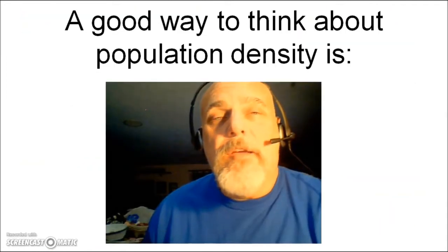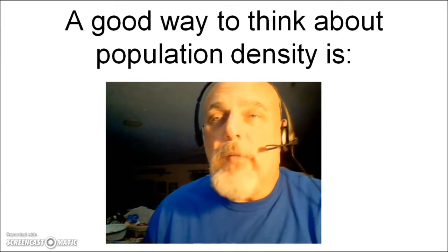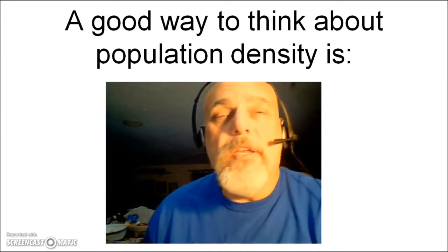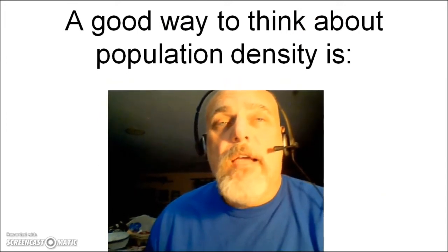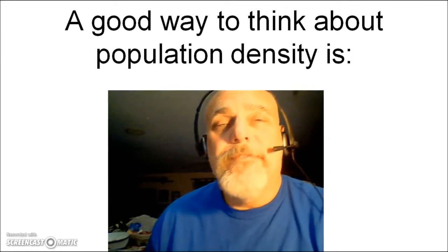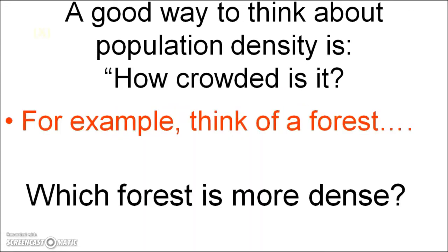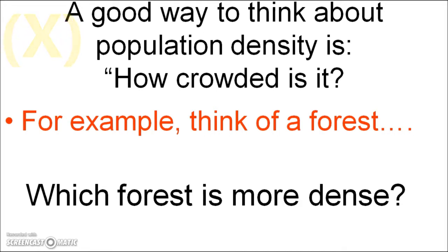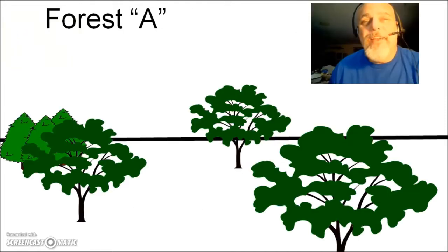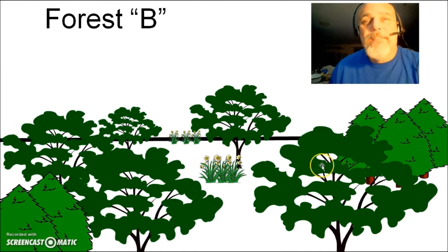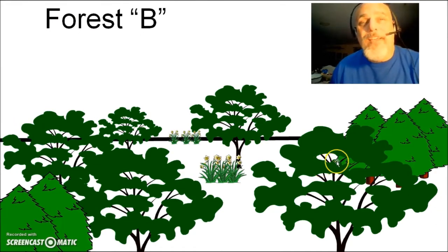Here's a good way to think about population density — think about how crowded is it. I'm going to show you pictures of two different forests. Consider which forest is more dense. The way to think about it is: how crowded is it? Here's forest A. Here's forest B. Which one do you think is more dense?